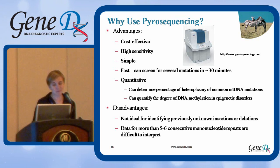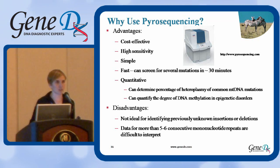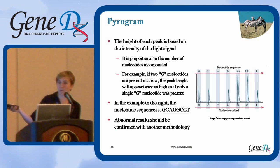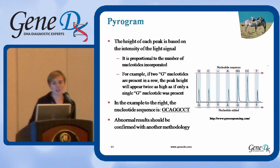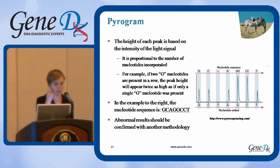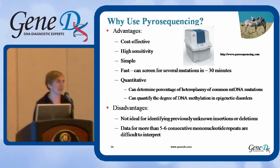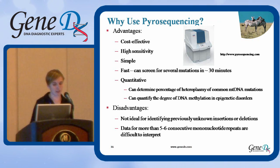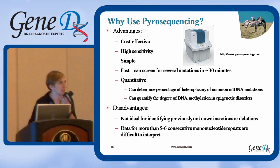You can also quantify the degree of DNA methylation, making it useful for epigenetic disorders. As with resequencing arrays, pyrosequencing is not ideal for identifying previously uncharacterized or unknown insertions or deletions. Additionally, because peak height is proportional to the number of nucleotides in a row, it's easy to see a doubled peak for two identical bases, but if you have more than five or six of the same nucleotide in a row, it becomes very difficult to interpret the data.